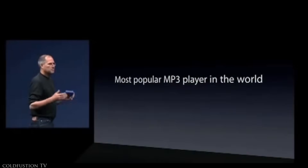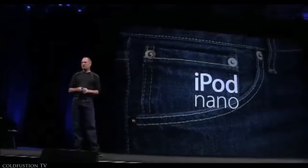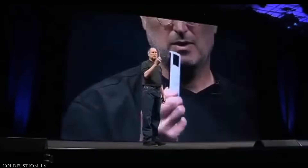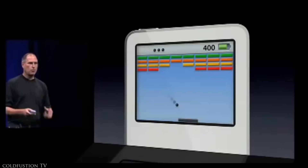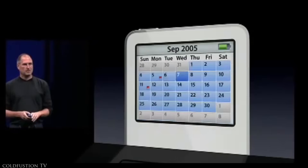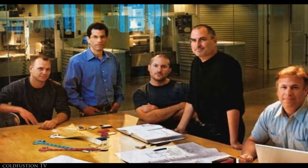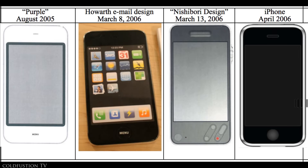In 2005, when Steve Jobs was first envisioning the iPhone, he could either make a miniature version of the Mac, or enlarge the iPod — Apple's main portable product at the time — into a phone. Steve assigned two different teams within Apple to pursue both options. The team in charge of scaling down the Mac created the iPhone OS, now known as iOS.